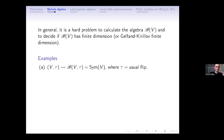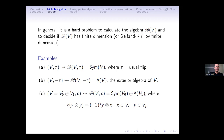Some examples: if you take the usual flip, the Nichols algebra is the symmetric algebra. If you take the anti-flip, you get the exterior algebra. If you take the super vector space braid, you get a direct sum of the symmetric algebra and the exterior algebra.